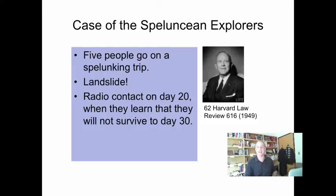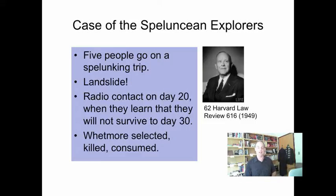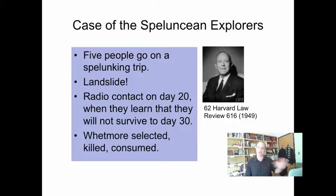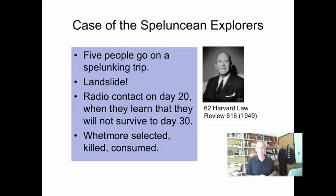Rescue efforts continue, and finally on day 32 the rescue is complete. But it turns out there are only four of the five Speluncean explorers remaining, because one of their number — Roger Wetmore — did not make it. It turns out that Wetmore originally had the idea of cannibalism to survive. But as soon as they got off the radio with the doctors, he said he thought they should wait a week and decide what it looks like at the end of the week. The rest of the crew said no, we're going to go forward with your idea. Somebody had a pair of dice, they all rolled, and Wetmore lost. They killed him — nobody's talking about how when they come out of the cave — and they consume him. On that basis, all four are alive on day 32 when the rocks are cleared away.